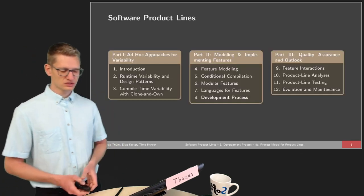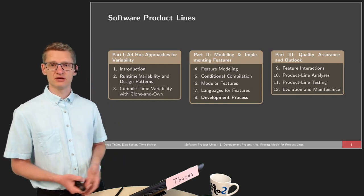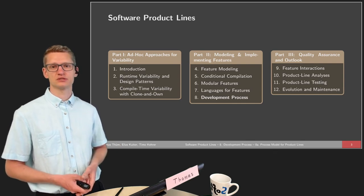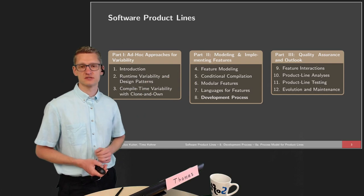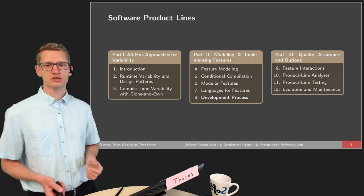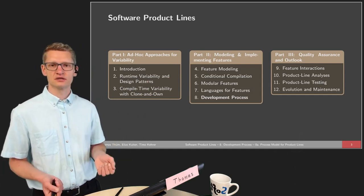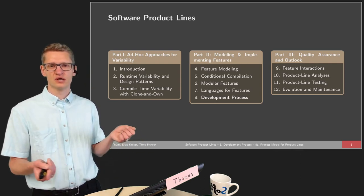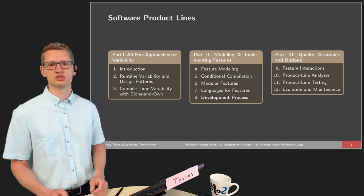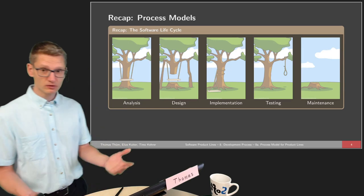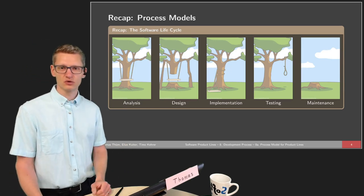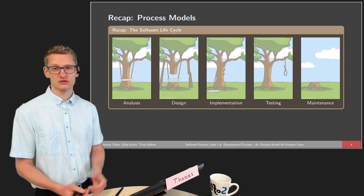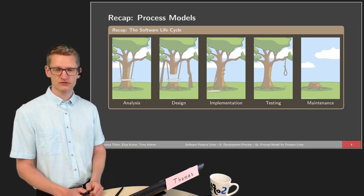We already talked about implementation techniques as the main focus of the lectures — lectures two and three, and lectures five, six, and seven have been on implementation techniques. But the question is how are they connected to requirements engineering, to testing, to feature modeling? When we look at classical development, this is known as the software life cycle, which consists of different phases during development: analysis, design, implementation, testing, and maintenance.